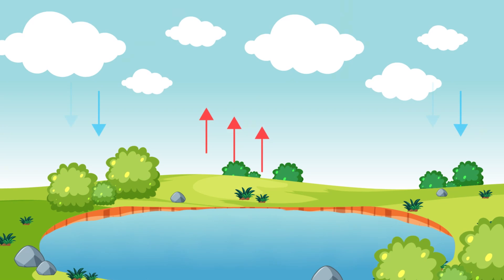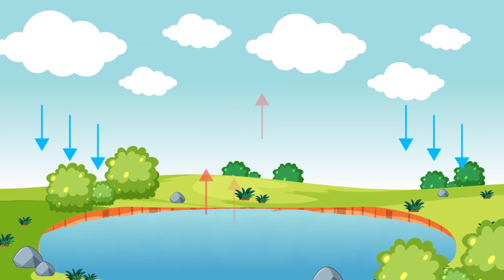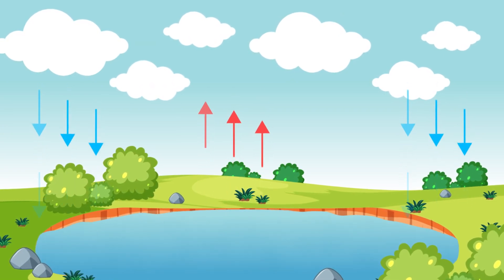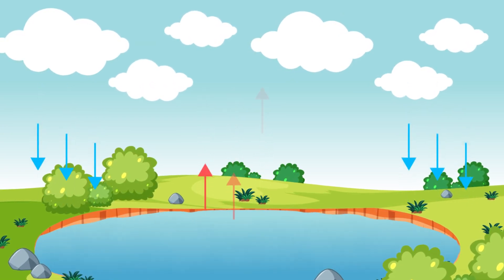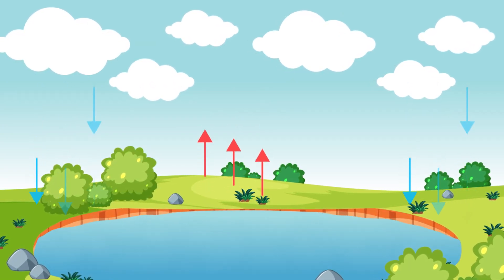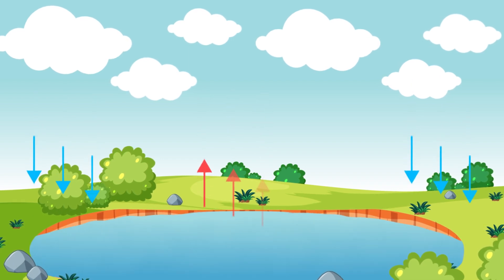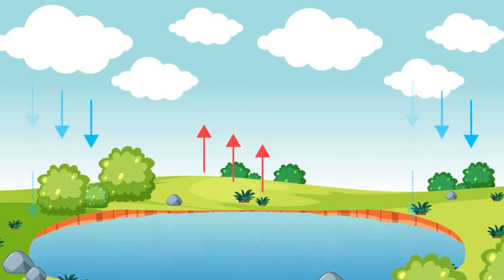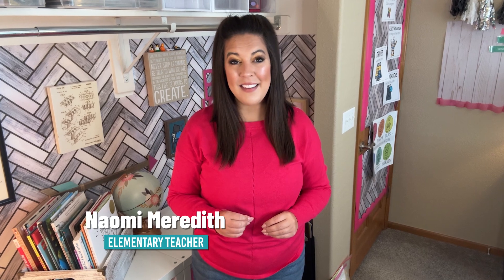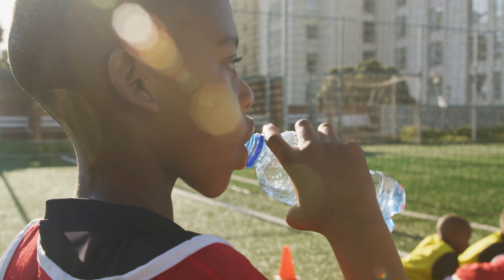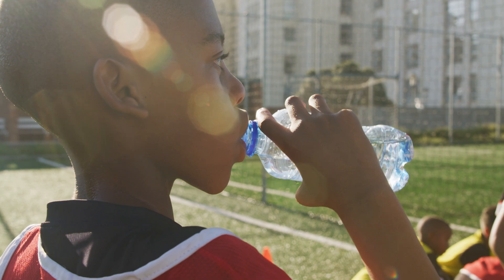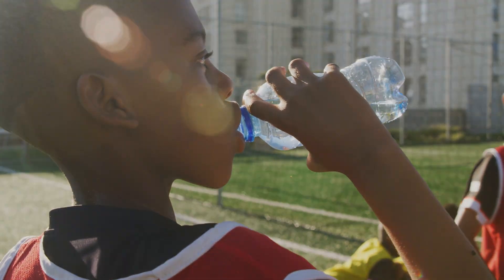What is the water cycle? The water cycle is the different stages water moves and flows around the Earth, and it's always happening. The water cycle is important because it balances ecosystems all over the world and provides us with the water we need to survive.